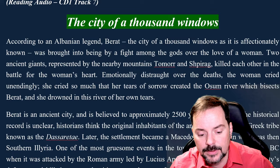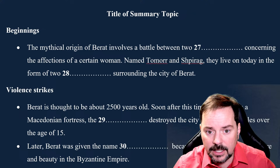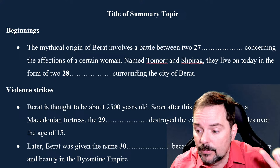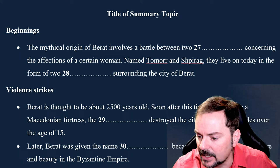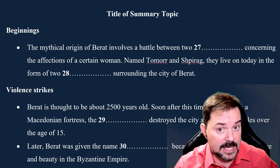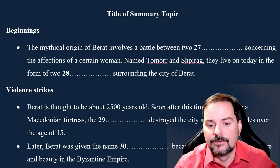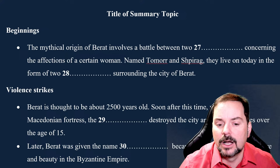Let's look at the questions. Here we have a title of summary topic — this is like a summary completion type question, which is good to read before the passage because all of this information is somewhere in the passage. The mythical origin of Barat involves a battle between two somethings concerning the affections of a certain woman named Tomor and Shparag. They live on today in the form of something surrounding the city of Barat.